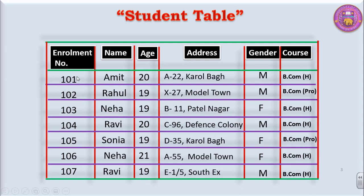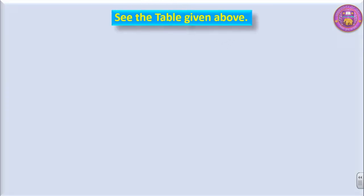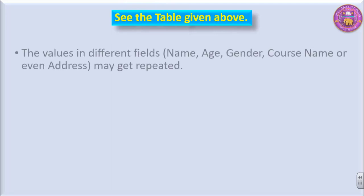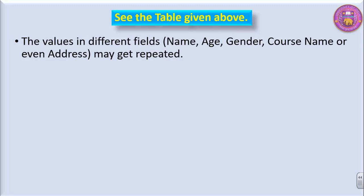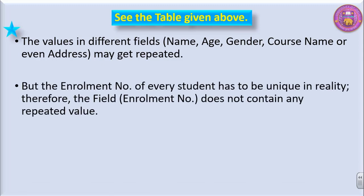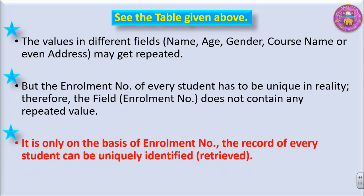This unique number makes each and every row a unique one. So enrollment number is unique in every row. We can declare this enrollment number as primary key — this is the main key on the basis of which we will retrieve information from the table. The enrollment number of every student has to be unique in reality. Therefore, the field enrollment number does not contain any repeated values. It is only on the basis of enrollment number that the records of every student can be uniquely identified and retrieved.